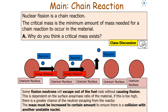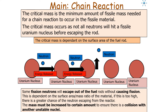Whether neutrons escape is dependent on the surface area to mass ratio of the material. If it's too high, there's a greater chance of a neutron escaping from the reactor without encountering a nucleus it can fission. So the mass has to be increased to a certain amount to ensure that neutrons produced in the fission process will collide with another unstable nucleus. The critical mass occurs because not all neutrons will hit a fissile uranium nucleus before escaping the rod.